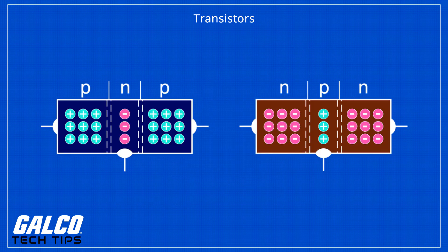This three-layer structure means that it will either contain an n-type semiconductor layer sandwiched between two p-type layers, or one p-type layer sandwiched between two n-type layers. These types of transistors are commonly referred to as PNP transistors and NPN transistors, respectively.